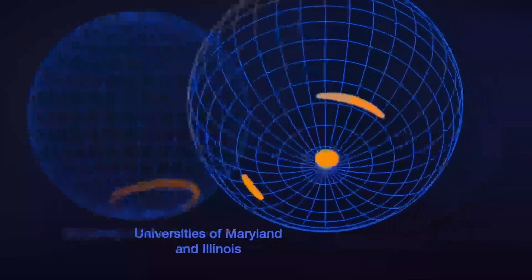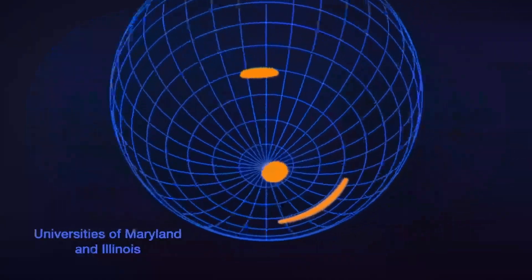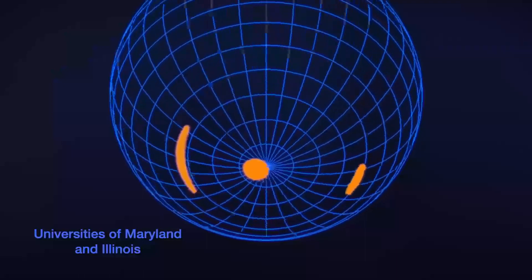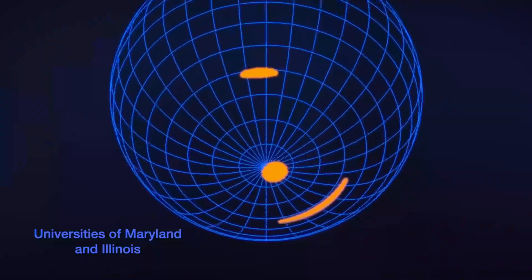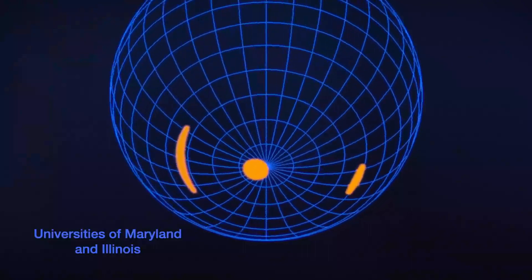The other team, led by researchers at the Universities of Maryland and Illinois, finds two oval hot spots. Their sizes, shapes, and locations closely match those derived from the other model. However,